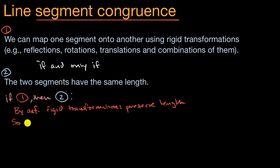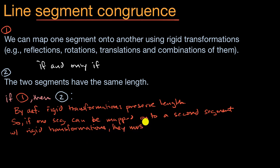So if one segment can be mapped onto a second segment with rigid transformations, they must have had the same original length. Or another way to say it is, then statement two is true.